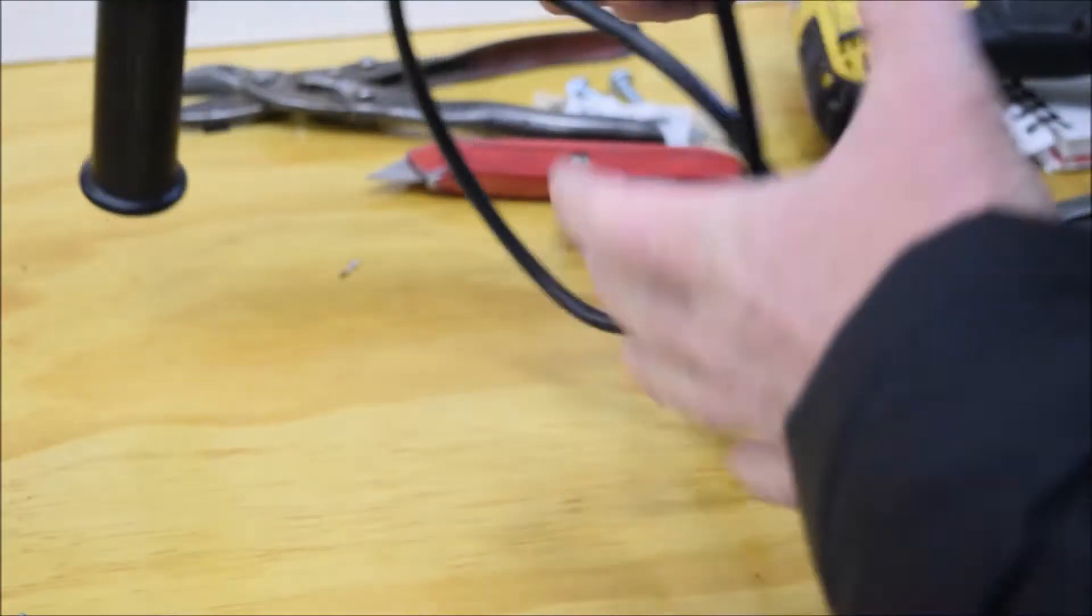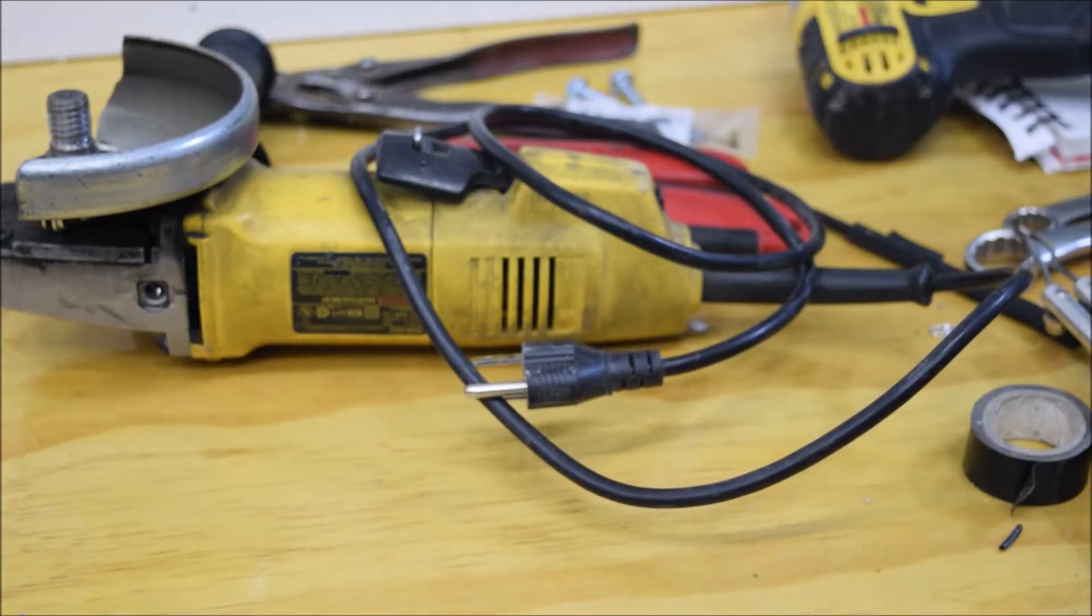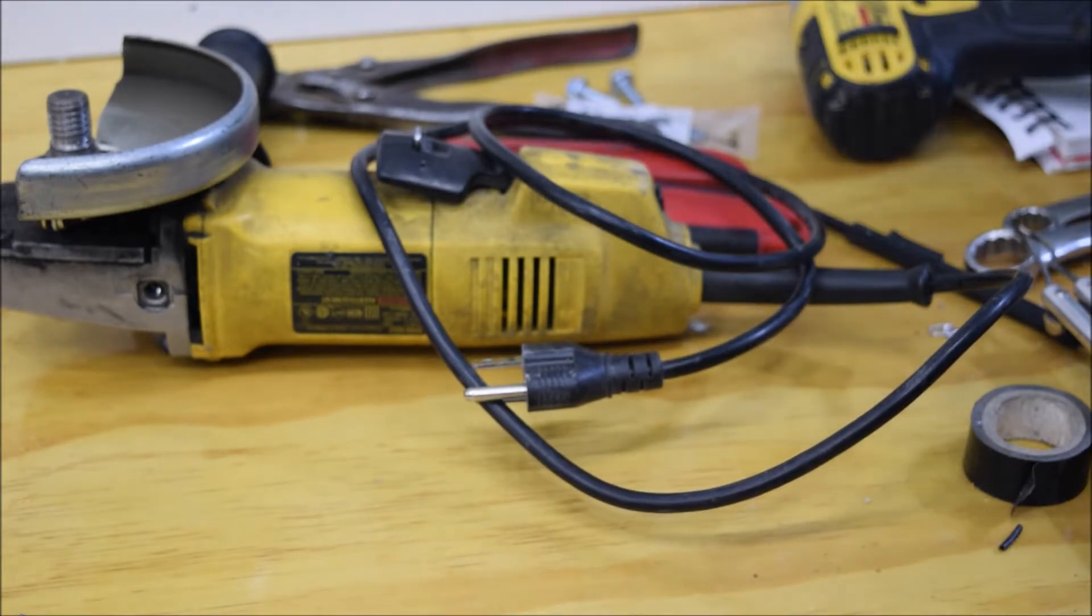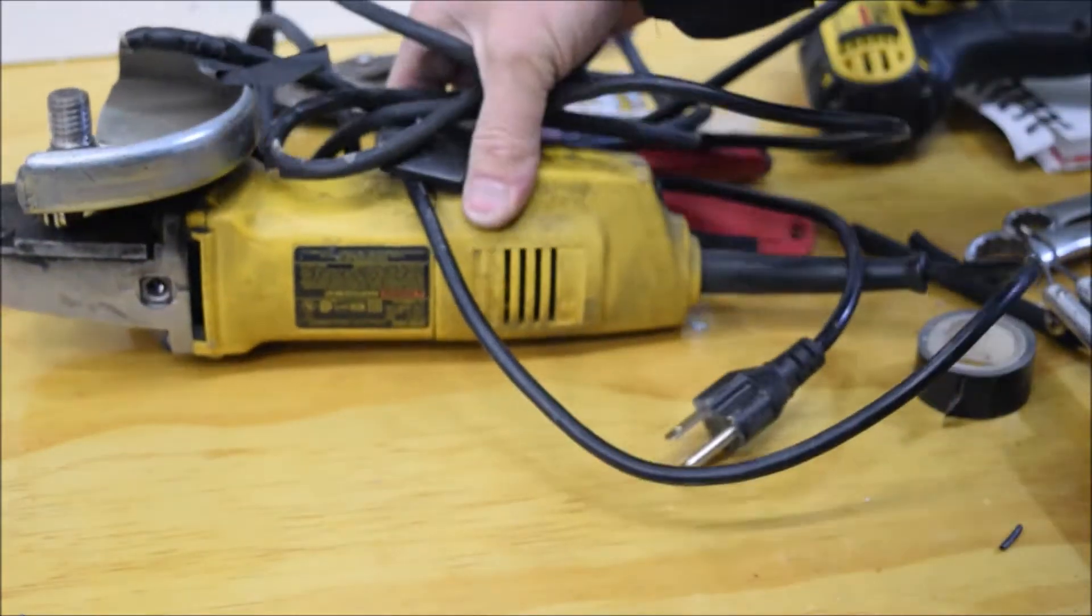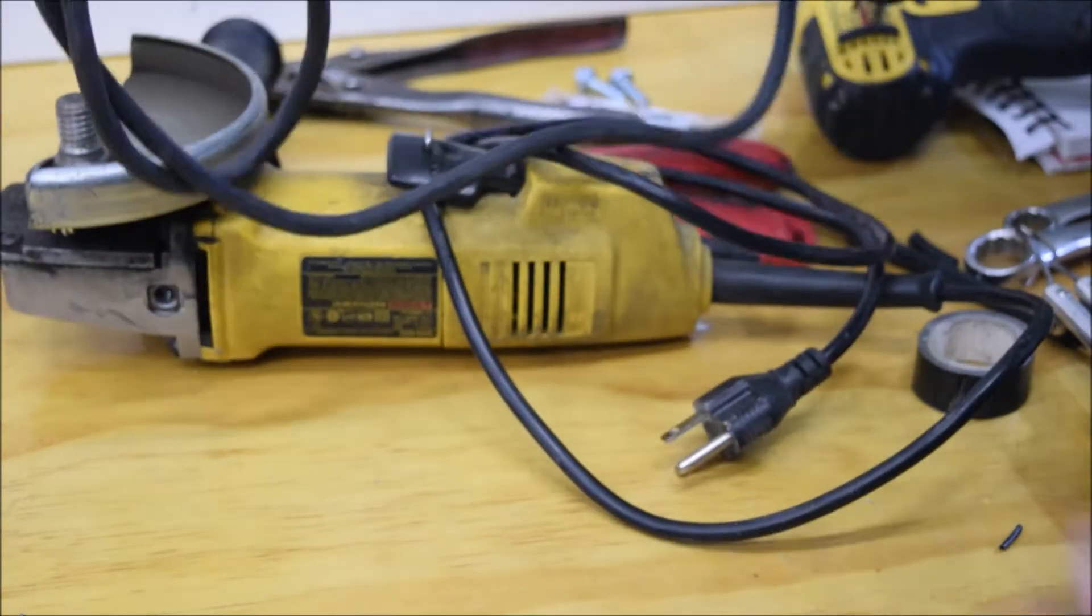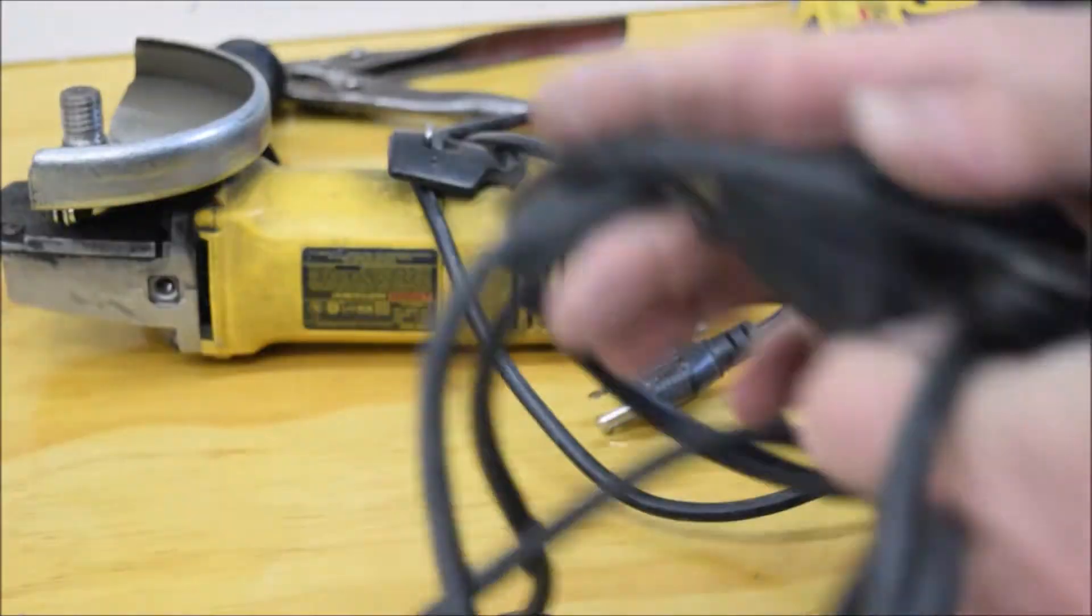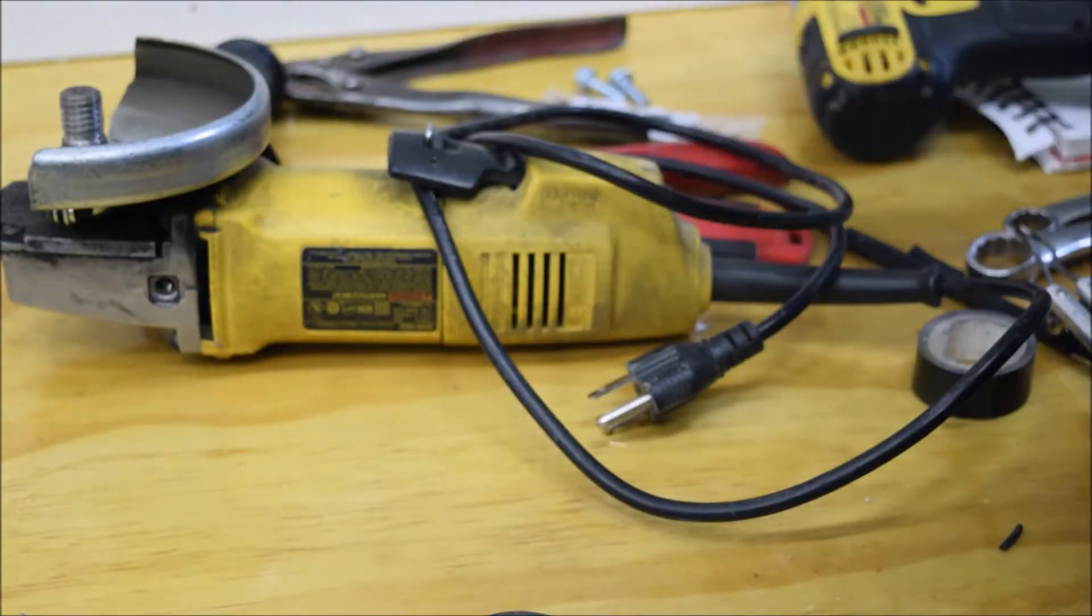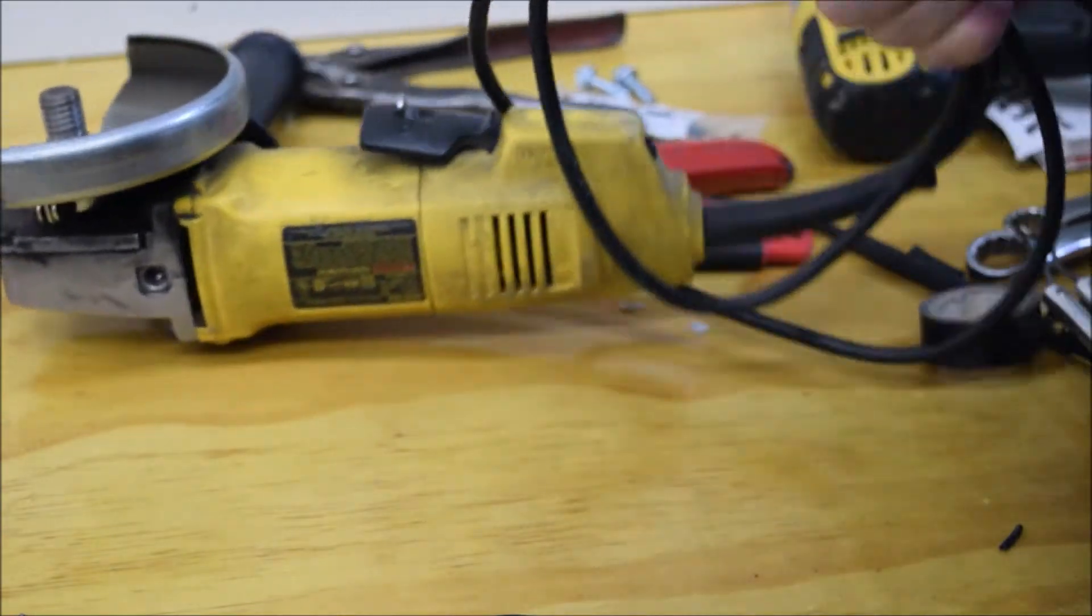Alright, so today we are replacing this destroyed power cord on a yellow angle grinder. This one was terrible and I just pulled it off. It was soft and yucky, about 10 or 15 years old. I just finished the replacement, so if you want to know how to replace your power cord on your yellow angle grinder...